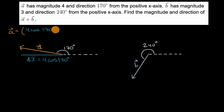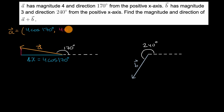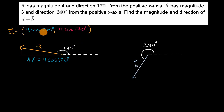The y component is going to be the change in y, which is the length times the sine of the angle we make with the positive x-axis, sine of 170 degrees. We can use a calculator in a bit to get approximations for these values, and then do the same thing for vector B.